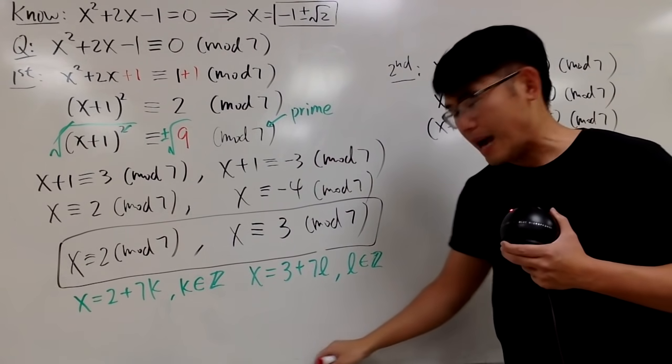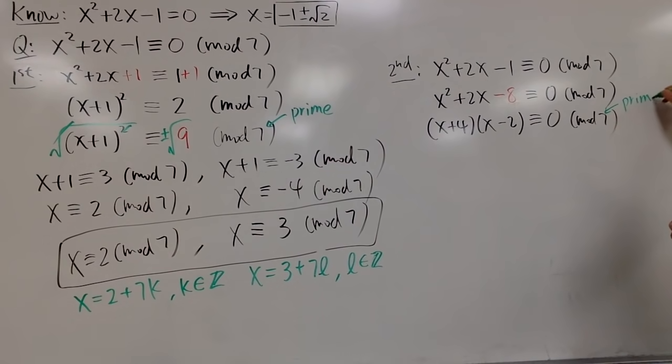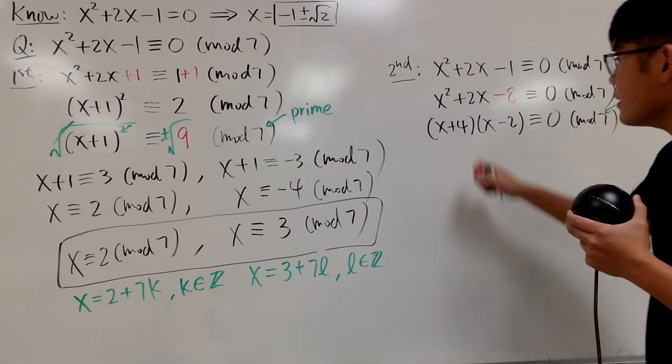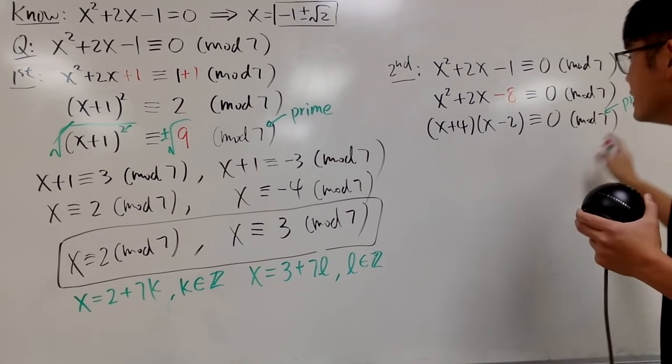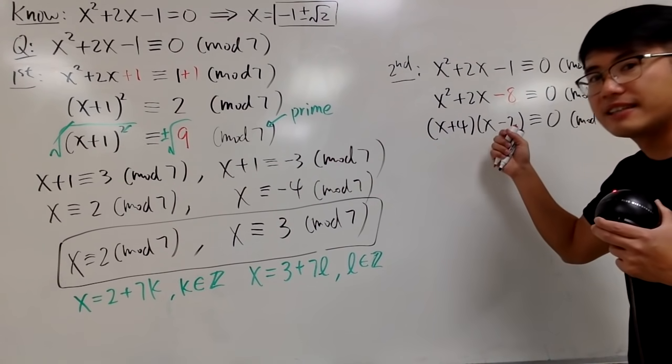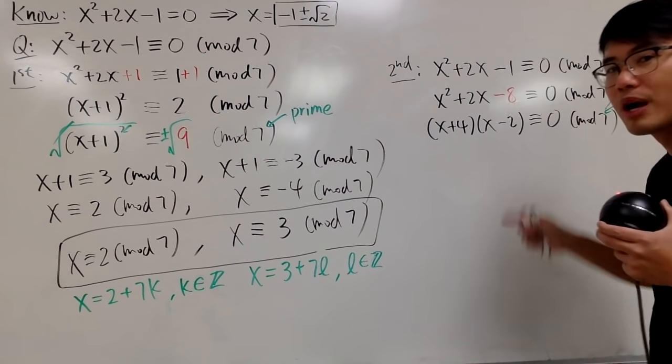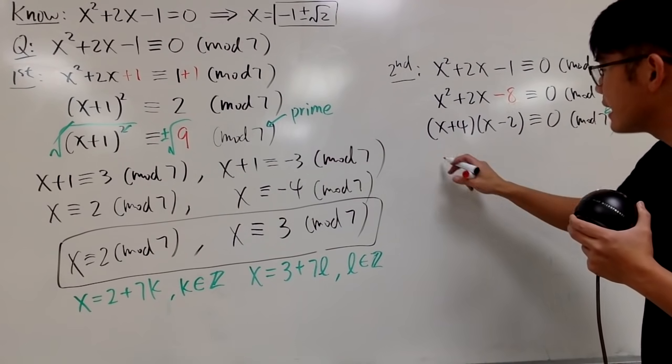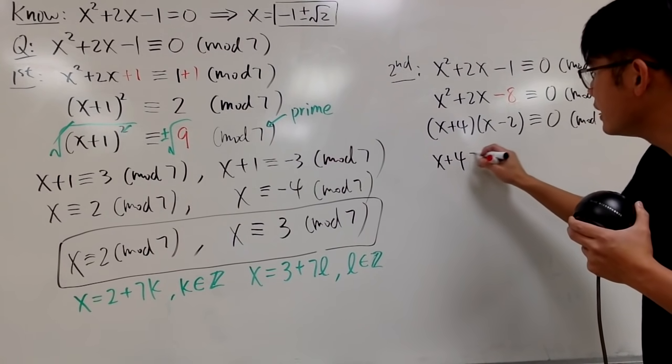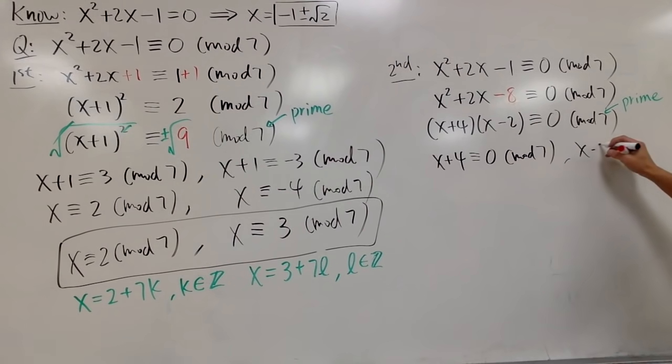Well, don't be so happy. This right here, it's easy. Because, again, 7 is prime. So, here's the deal. When you have this times that is congruent to 0 mod 7, what that means is that 7 divides this or 7 divides that. Right? 7 divides this or 7 divides that. Because 7 is a prime. You guys can check on other videos for the proofs. And right here, I will just tell you, because of that, I can say, x plus 4 is congruent to 0 mod 7. And then the other one is x minus 2 is congruent to 0 mod 7.